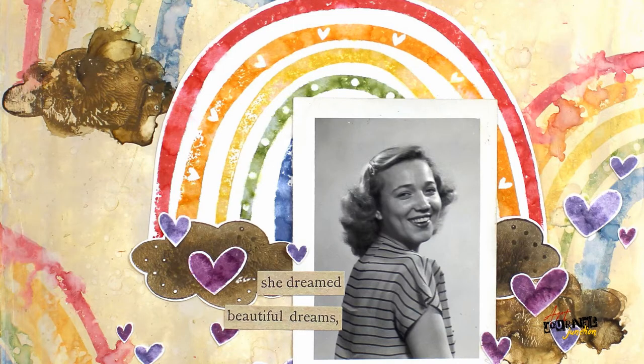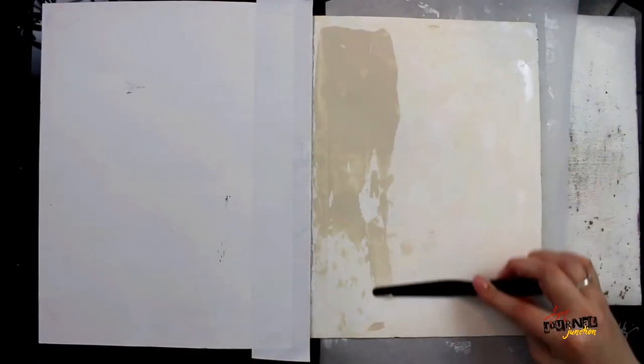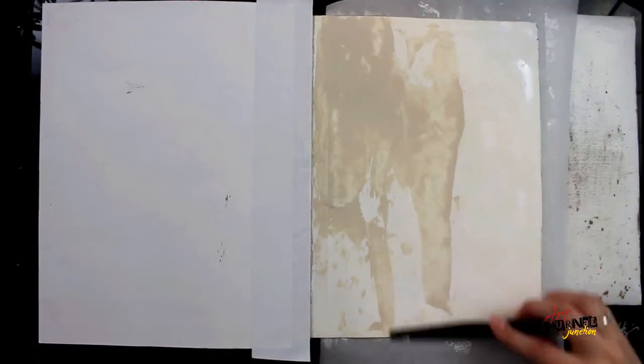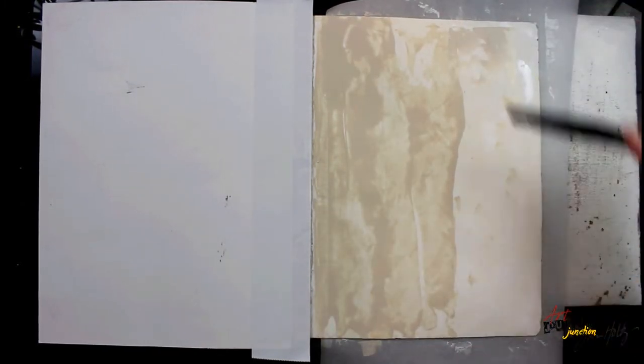Hey everybody, here's a sneak peek at the art journal page we're making today. I'm working in my large Dylusions art journal on a page that's already been pre-gessoed, and now I'm applying paint with my palette knife.